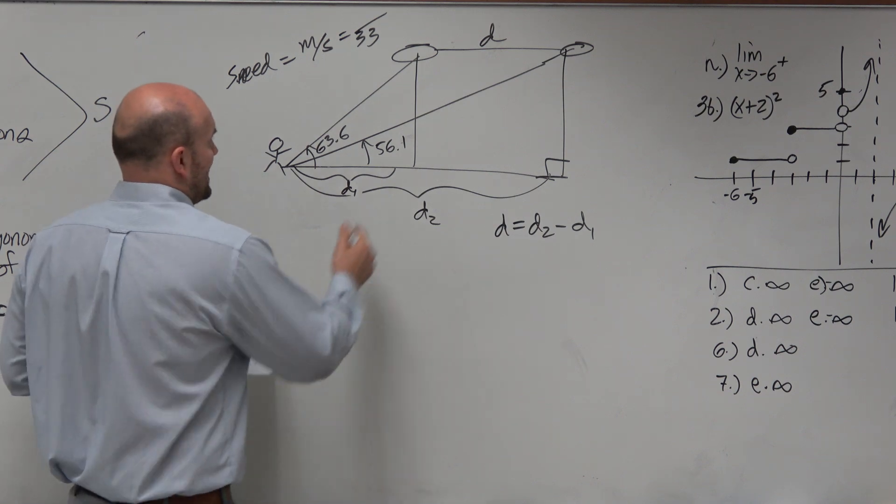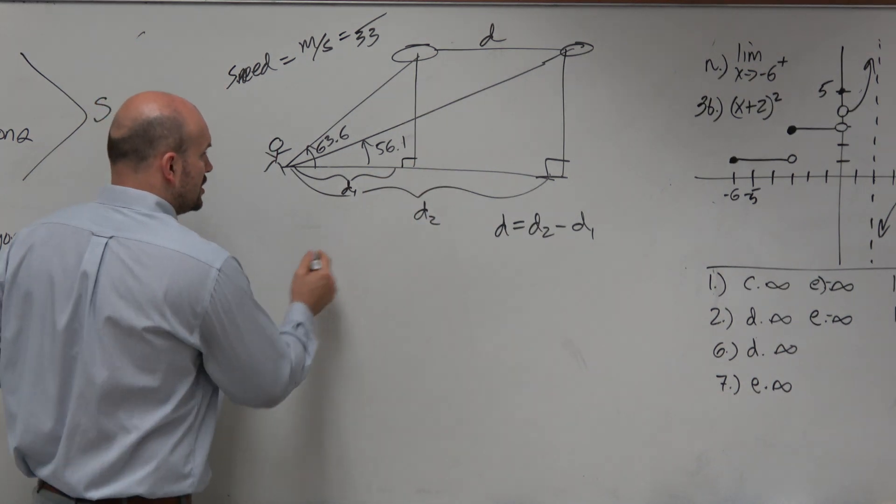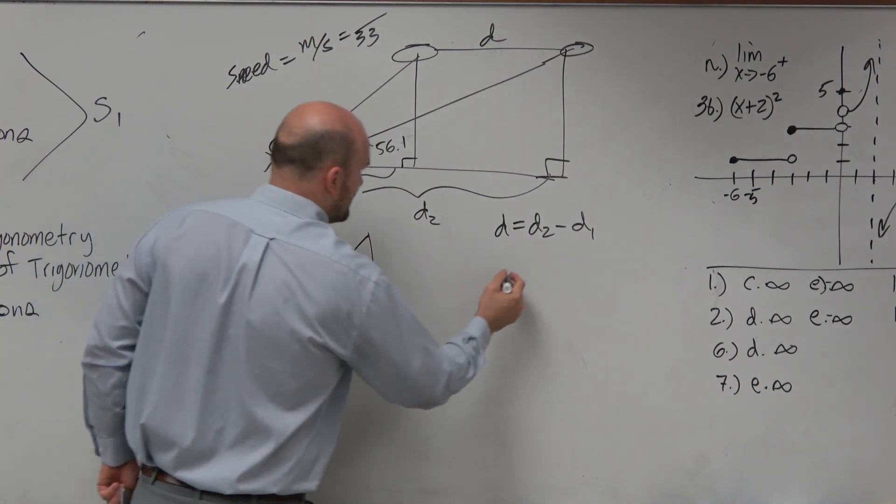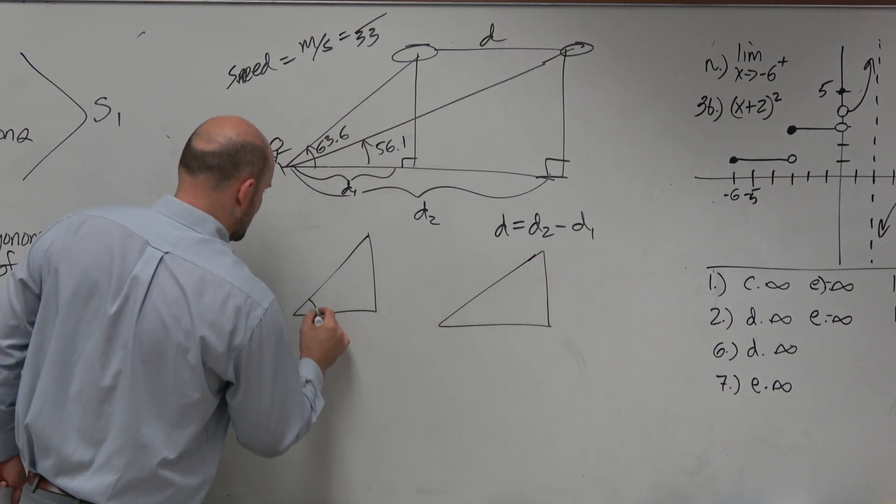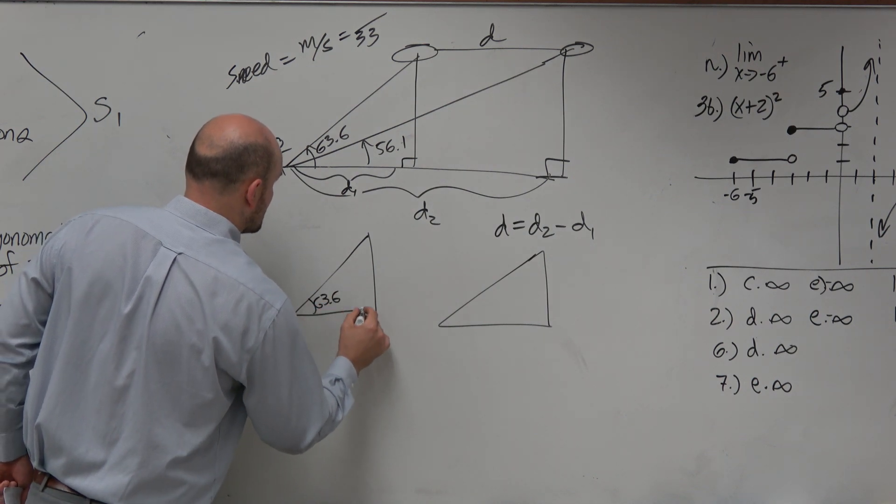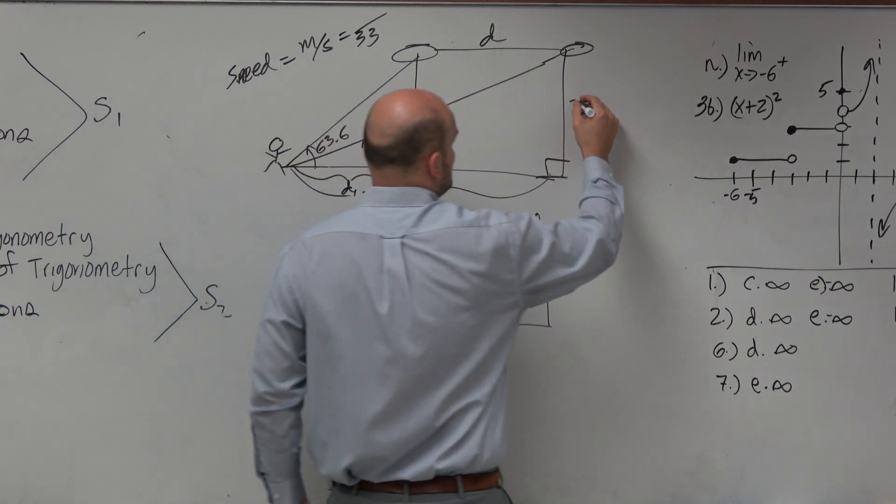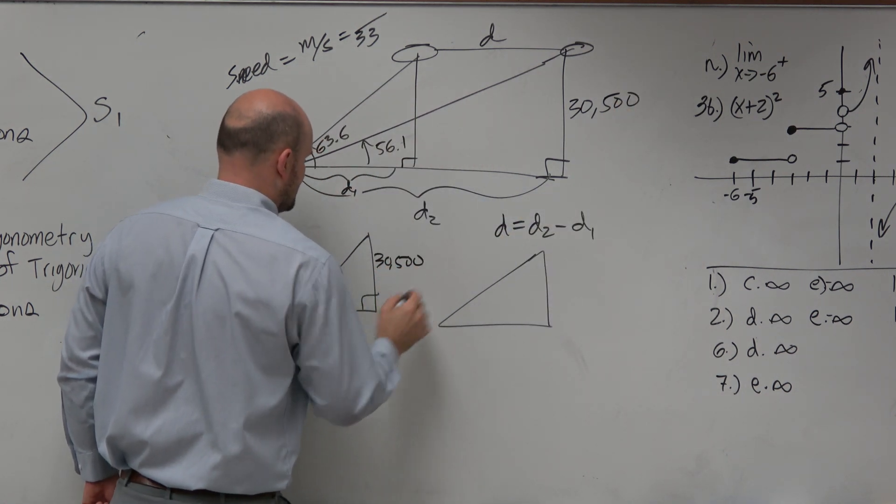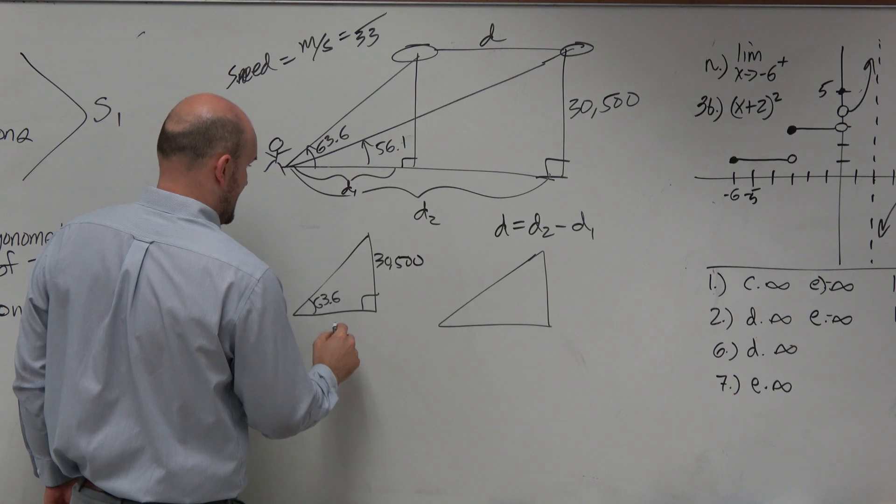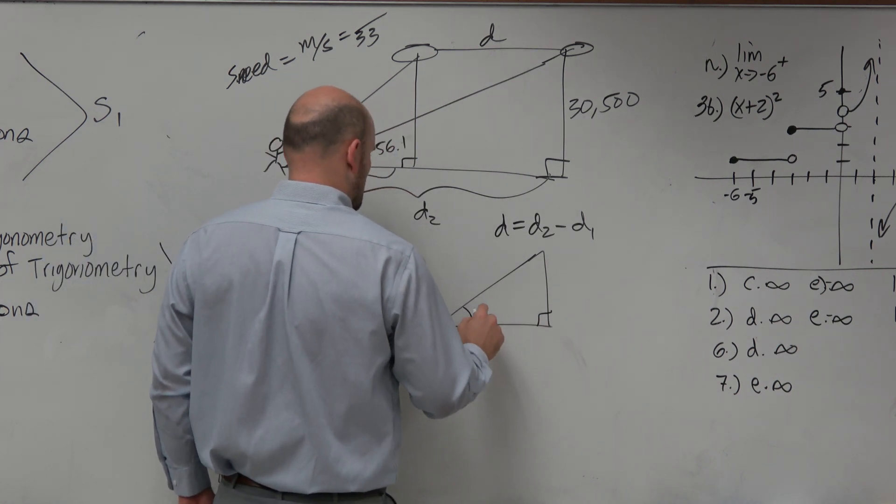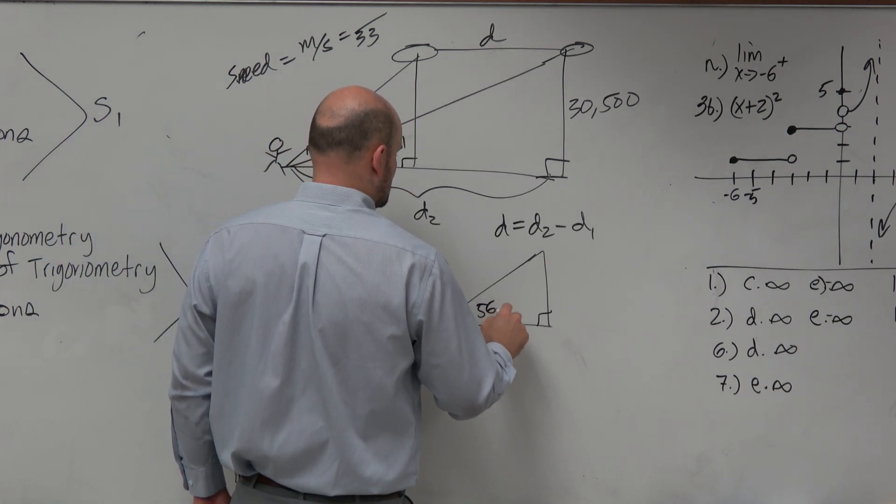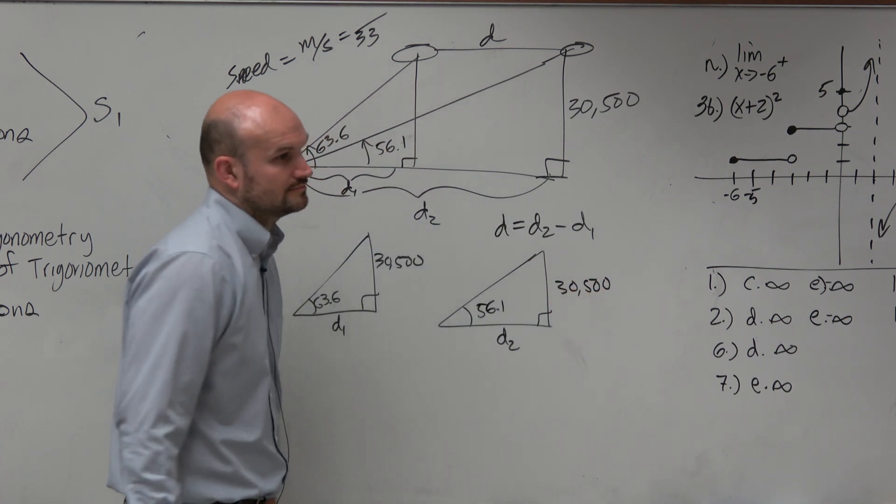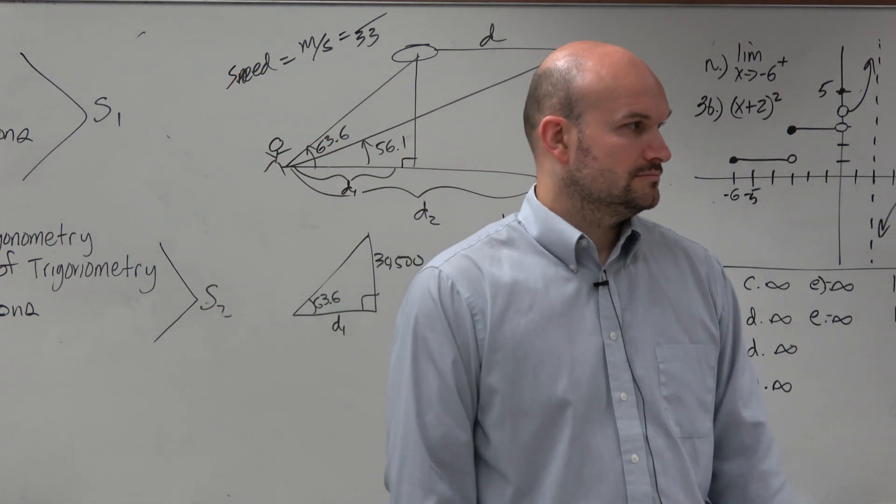So we have a right triangle. We have two right triangles, actually. Let's take out the triangles that we want to solve. So we have this one is 63.6°. Remember guys, the altitude is 30,500. That is for both triangles. And that's D1. This one is 56.1°. That's D2, 30,500.